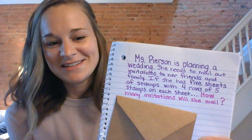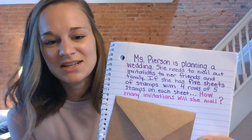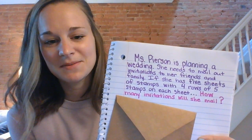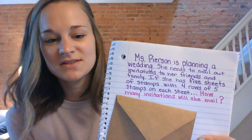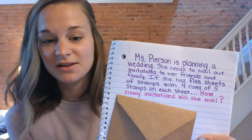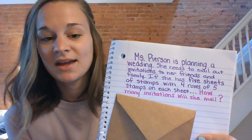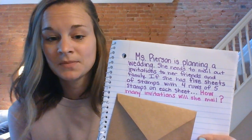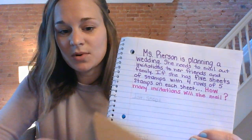It says: Ms. Pearson is planning a wedding. She needs to mail out invitations to her friends and family. If she has five sheets of stamps with four rows of five on each sheet, how many invitations will she mail? So this is actually a two-step word problem.